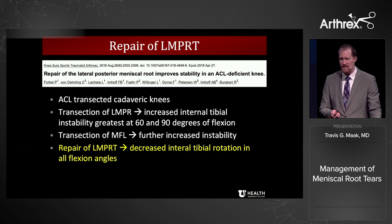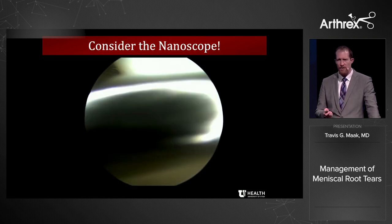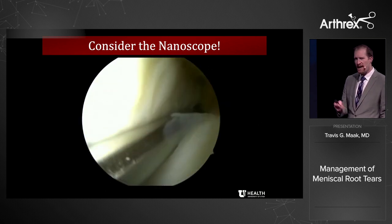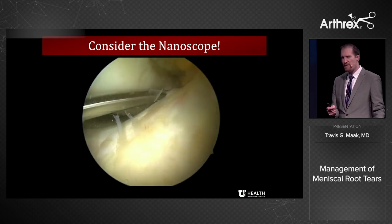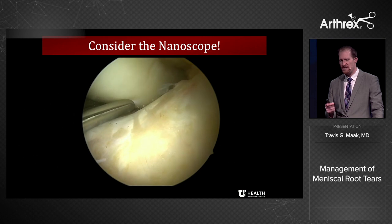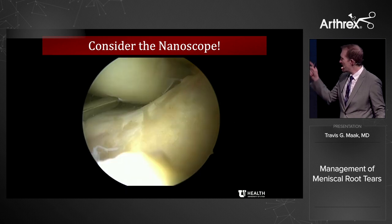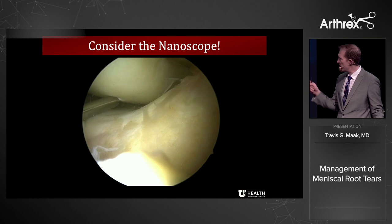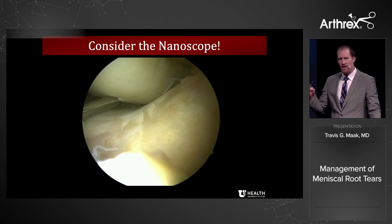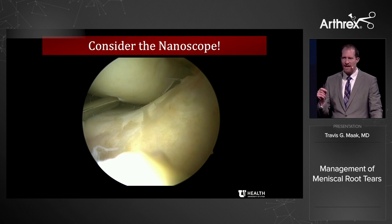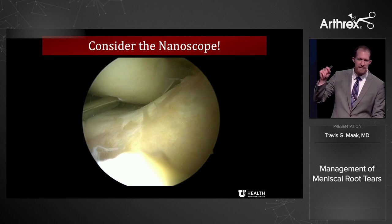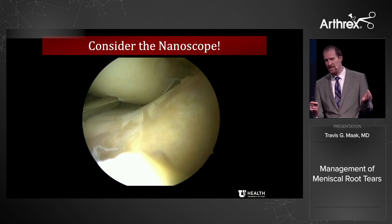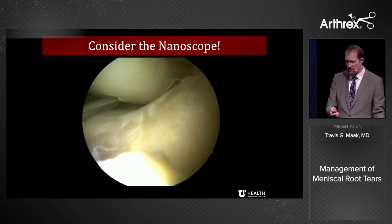I would suggest the nanoscope is a very good opportunity for evaluating and treating these tears. The medial meniscus root can be very hard to visualize in tight knees. Here you can see the nanoscope visualizing the medial side. It also bends, which reduces cartilage damage and scope trauma when trying to view the medial root. You can either percutaneously release the MCL or use the nanoscope.